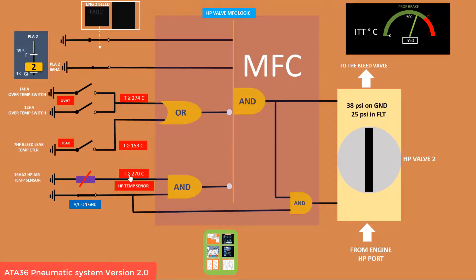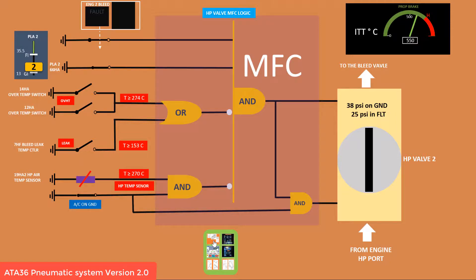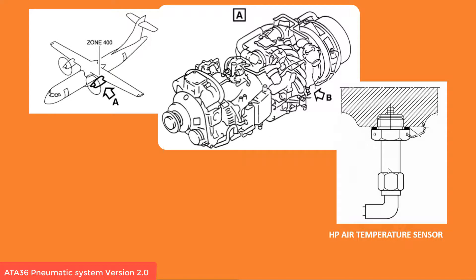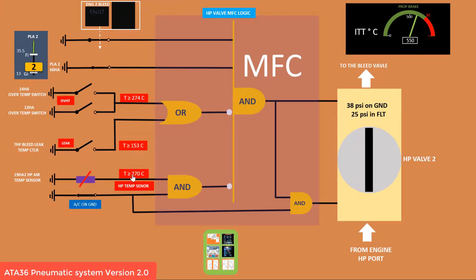Next is the HP temperature sensor, located at the HP compressor outlet. If the temperature is greater than 270 degrees Celsius, the MSC closes the HP bar. This only works on the ground - in flight, the MSC will not monitor this temperature.